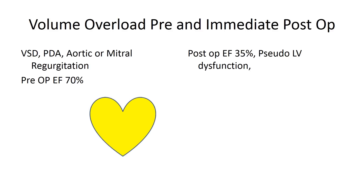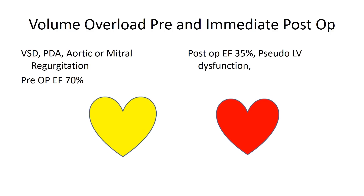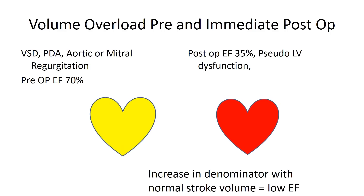In patients born with shunts, in patients with regurgitations, and even people with complete heart block, the heart enlarges, hypertrophies, muscle increases, and the ventricular volume increases. If the patient undergoes corrective surgery — the regurgitation treated or the shunt closed — the heart is still large afterward. The resting ejection fraction will not be high because the stroke volume of 70 ml against a very large denominator is going to be low. This is pseudo-LV dysfunction. A large ventricle at rest will not be ejecting 50–60%; the denominator is simply too high.